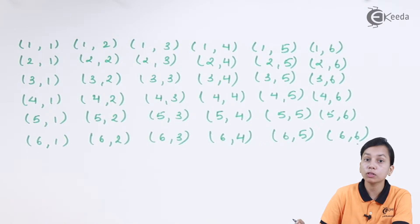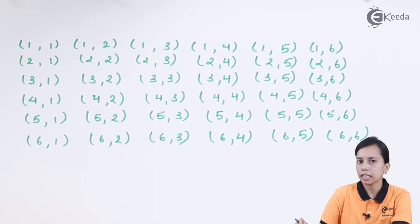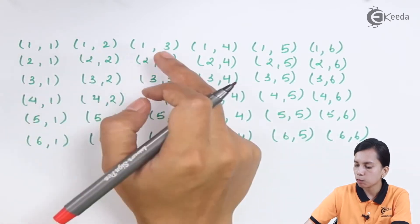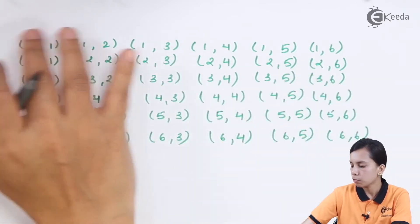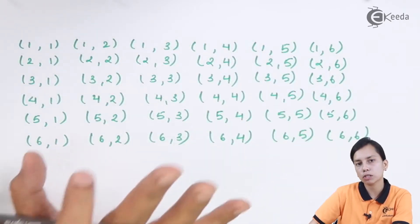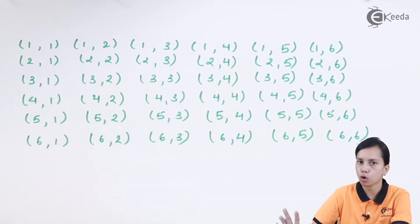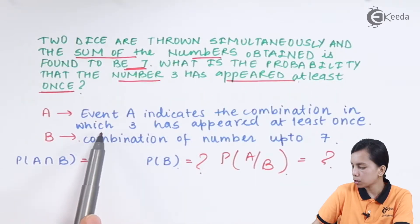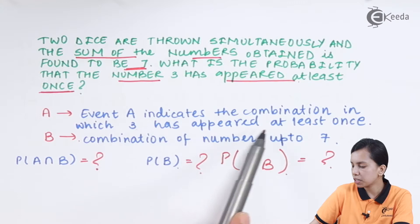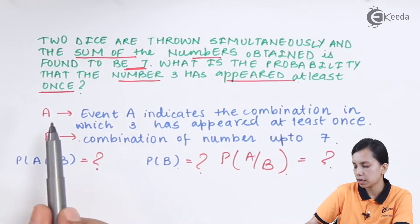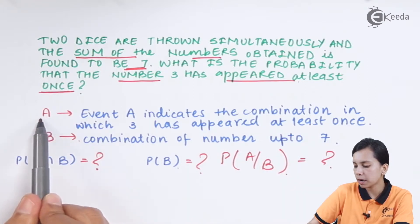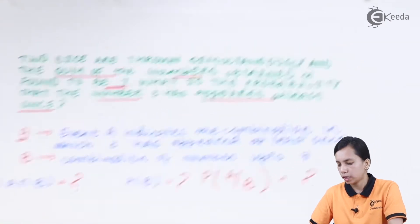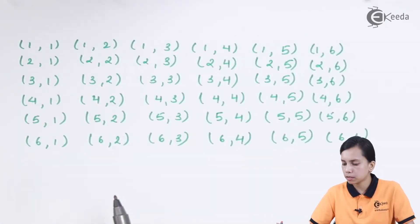When the two dice are thrown there are total 36 sample spaces for this particular event — (1,1), (1,2), (1,3), and so on. This is how we can get the total possible combinations of numbers on the two dice. Now I want to find the probability for the total number of possible combinations in which three has appeared at least once — that combination is nothing but event A. Let me check from the sample spaces.